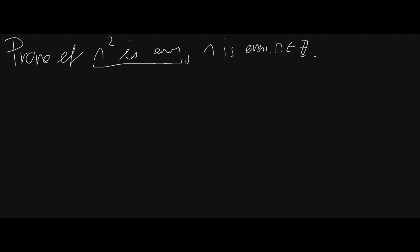We have p implies q, but this direct approach is not very nice, because we'd have to say n squared equals 2k plus 1 and then square root it. It just wouldn't be very nice. Wouldn't it be nicer if we could start with n on its own? Well, that's what we're going to do.